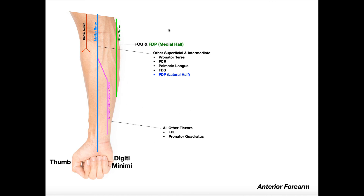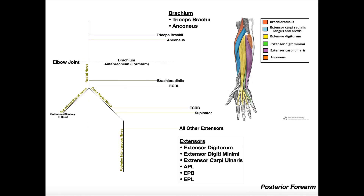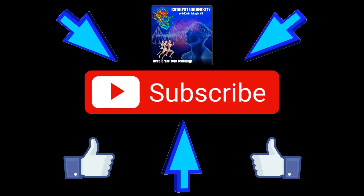Instead of rote memorization for every innervation, think about it using a strategy like this. In the next video, we'll continue into the hand, where both the ulnar nerve and median nerve have innervation. If you want more on the posterior forearm, go back and watch the previous video. Please like this video and subscribe to the channel for future videos and notifications. Thank you.